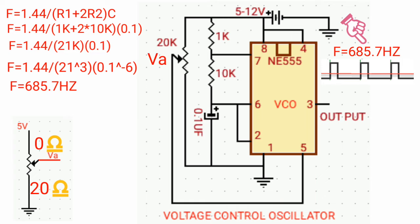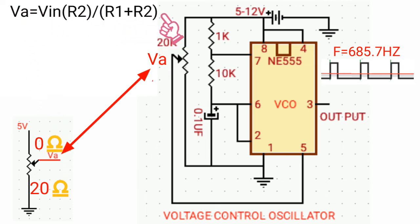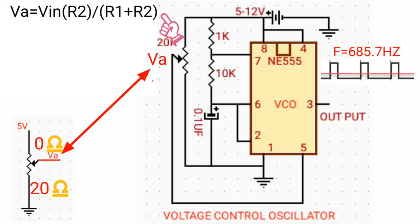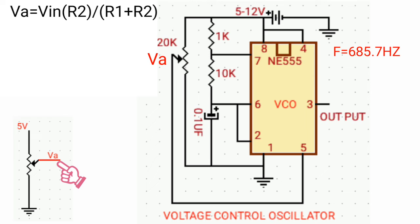Let's say the middle pin of the variable resistor is V sub A. The variable resistor is acting like a voltage divider. By using the voltage divider formula, we can calculate the output voltage of the variable resistor at the middle pin, which controls the control voltage at pin 5. Then we can substitute the values of the variable resistor.